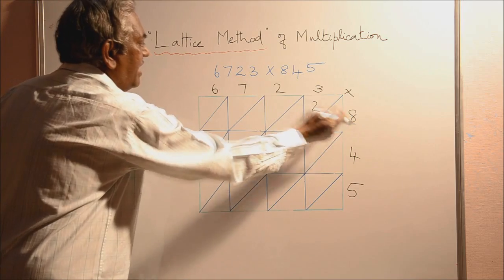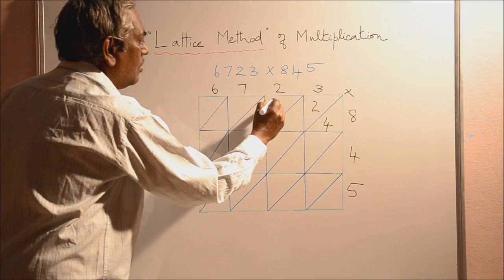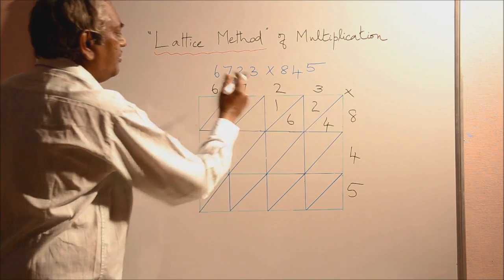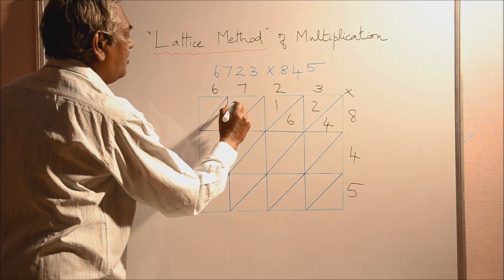Multiply this 8 and 2, that will give you 16. Write 1 there and 6 here. 8 into 7 gives you 56.